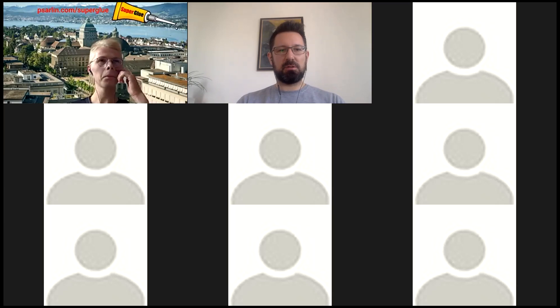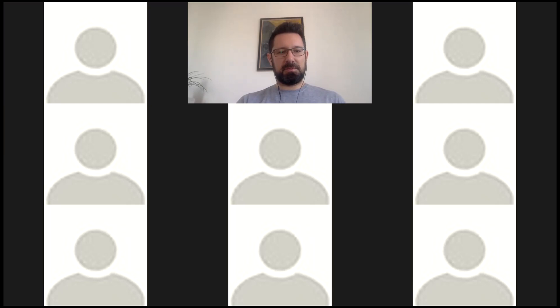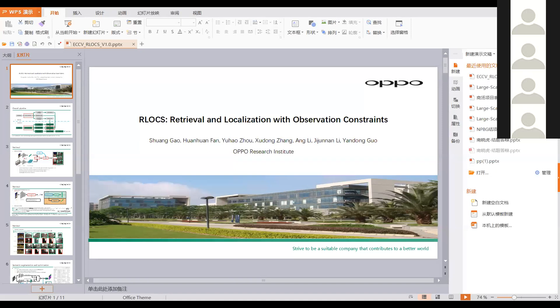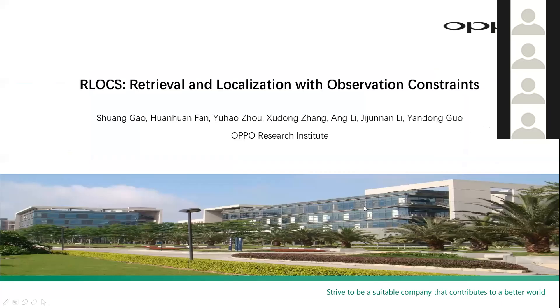The next talk is by the runner-ups of the handheld devices challenge, given by Xudong Chang. We are from OPPO Research Institute, and our localization method is called RLOCS, which stands for Retrieval and Localization with Observation Constraints. It is an honor for us to present our visual localization method.